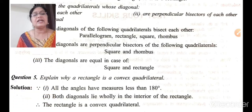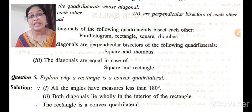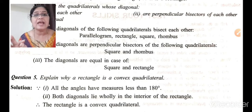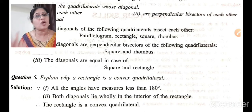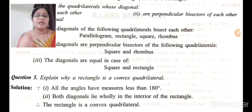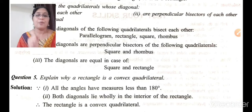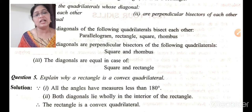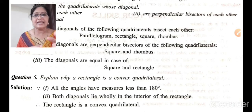Question five: explain why a rectangle is a convex quadrilateral. A convex quadrilateral has two properties: all interior angles should be less than 180 degrees, and both diagonals should intersect inside the interior of the polygon.